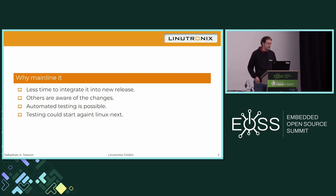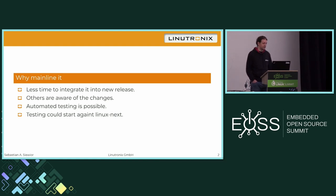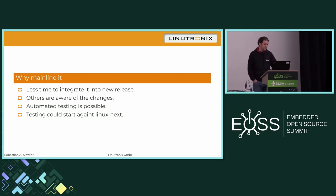We tried to mainline RT for quite some time. Mainlining means we would be part of the upstream release and all other people using the kernel would be aware of the changes we made. Once things are upstream, one wouldn't have to necessarily make any changes release to release. We could also do testing against Linux Next and see fallout early. This is basically the whole motivation behind it.